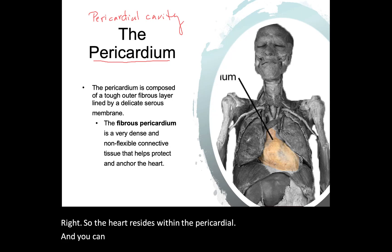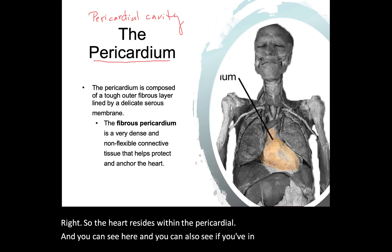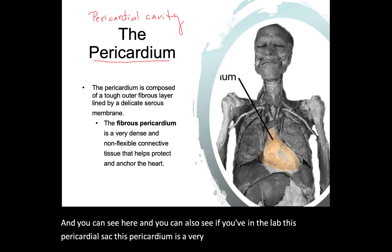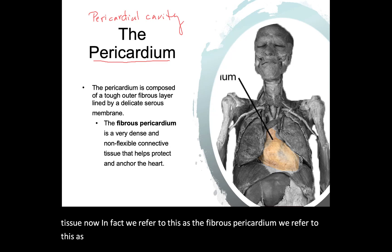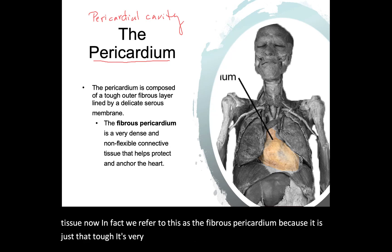You can see here — and also in the lab — this pericardial sac, this pericardium, is a very tough, fibrous layer of connective tissue. In fact, we refer to this as the fibrous pericardium, because it is just that tough. It's very dense, it's not really flexible, and it's not designed to be functional beyond providing separation and protection to the heart.